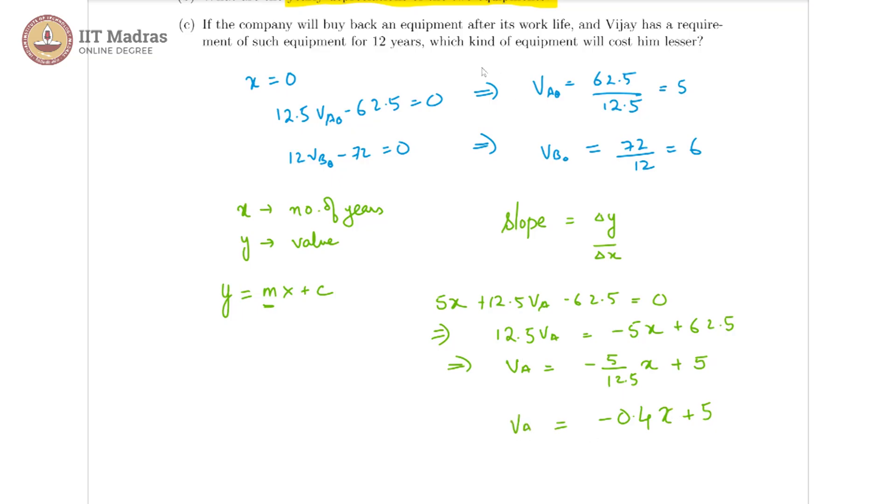We had already seen it to be equal to 5. So that is equal to minus 0.4x plus 5. This is VA. So here our m in the equation is basically minus 0.4. So this is the reduction in one year, minus 0.4 thousand.